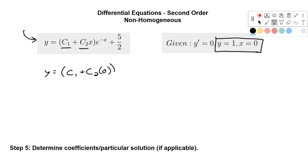And this is e to the negative 0 plus 5 halves. And e to the 0 is 1. C2 times 0 is just going to be 0. So what we're going to end up with here is c1 plus 5 over 2. And we know that when x is 0, y equals 1. So that equals 1.